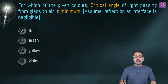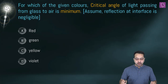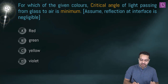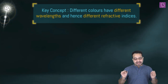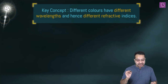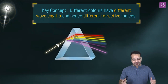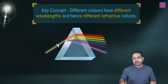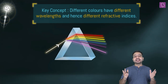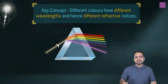For which of the given colors is the critical angle of light passing from glass to air minimum? The options are red, green, yellow, or violet. The key concept is that different colors have different wavelengths and hence different refractive indices — as seen in the famous prism diagram where white light splits into constituent colors.